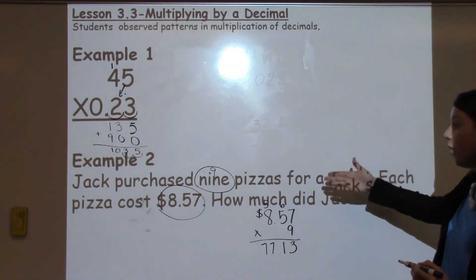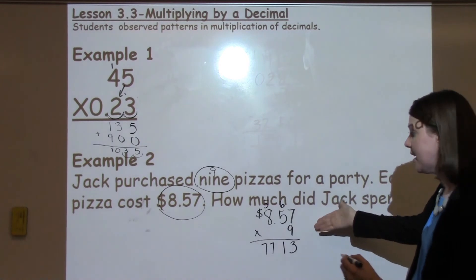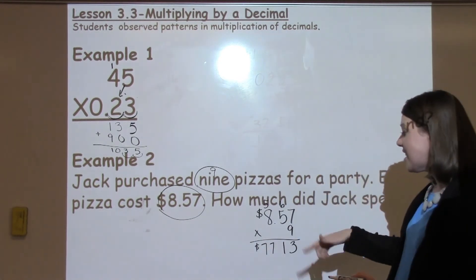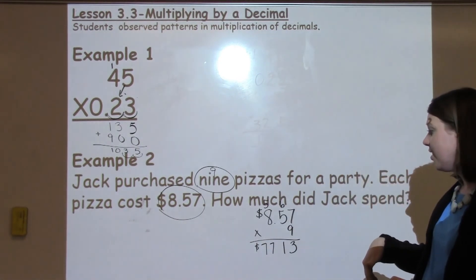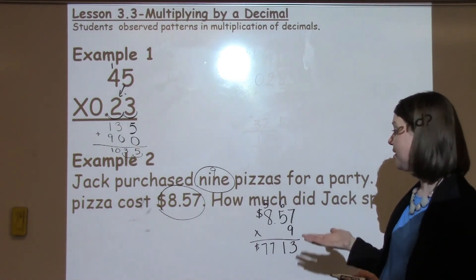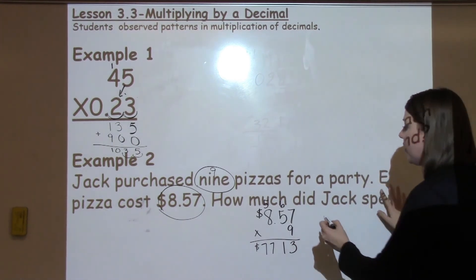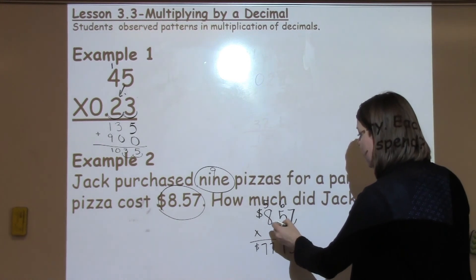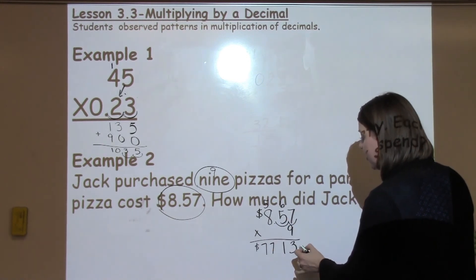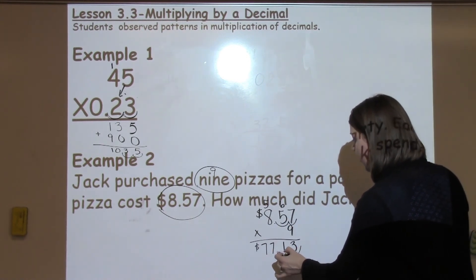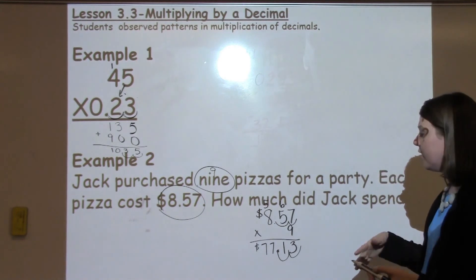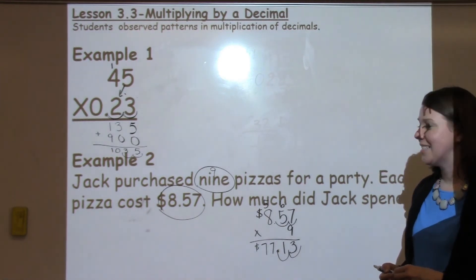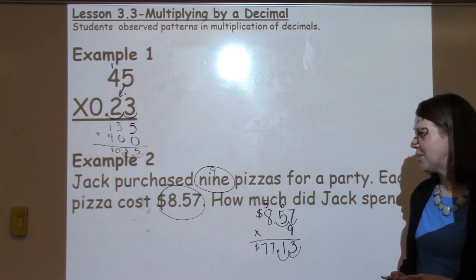Again, I need to go into my problem to place my decimal. Looking at my number right now, $7,000 for pizza seems a little bit unreasonable, so I need to go back and look for that decimal. I go to the end of my number and count: 1, 2 hops over. Into my answer: 1, 2 hops over. $77.13 seems a lot more reasonable for the 9 pizzas that were purchased for the party.